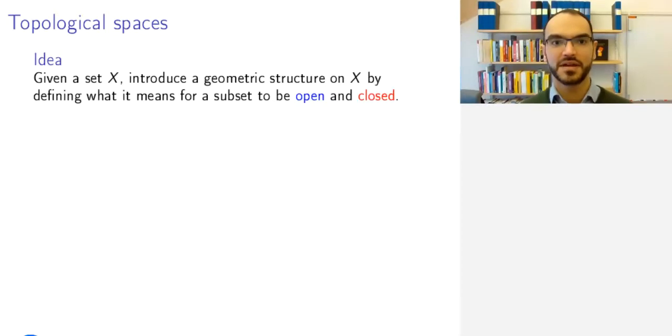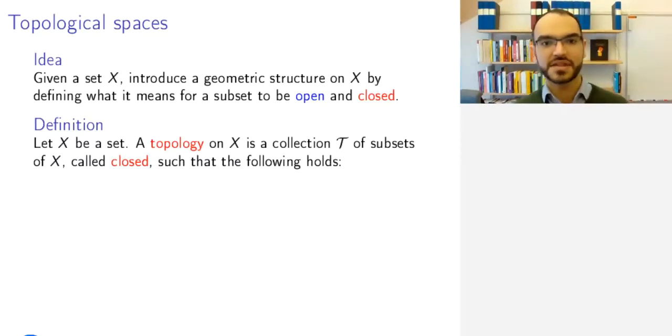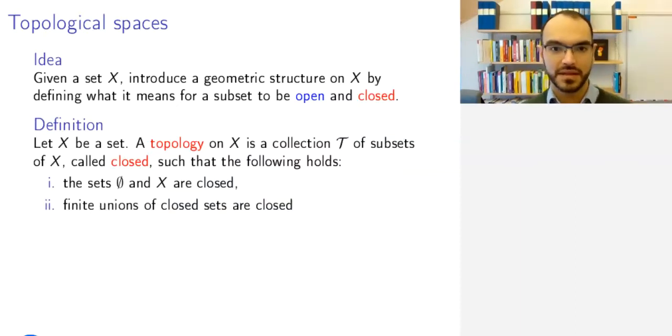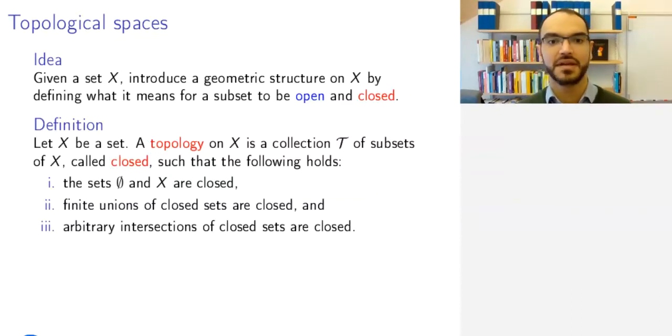We want to define what it means for a set to be closed and what it means for a set to be open inside this topological space, which we will call our set X. Given a set X, a topology on X is a collection of subsets that you call closed and that satisfy the following conditions. First, you want the empty set and the whole set to be counted as closed. Second, you want finite unions of closed sets to be closed. Third, you want arbitrary, meaning finite and infinite, intersections of closed sets to be closed.